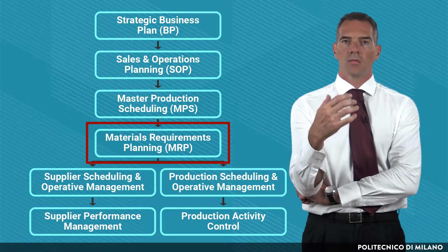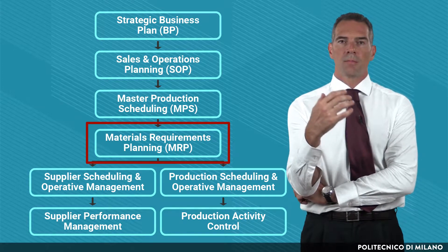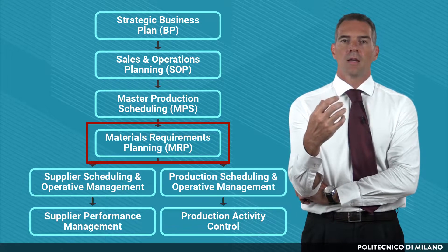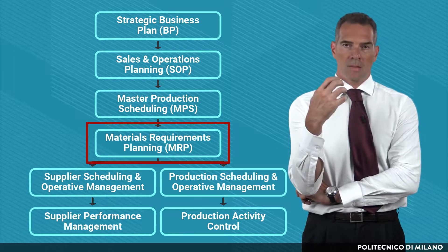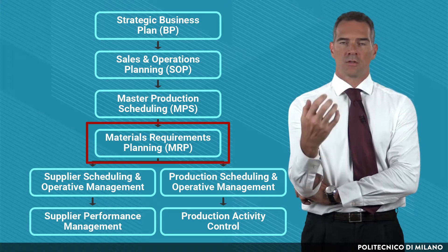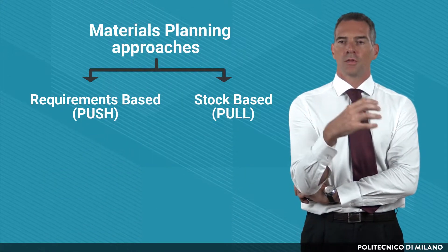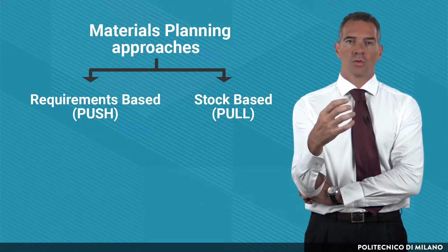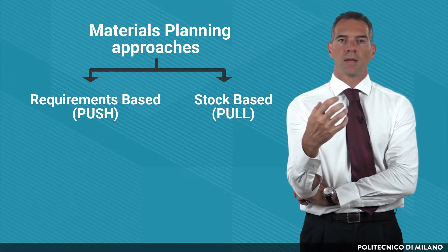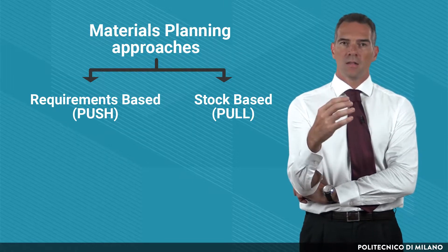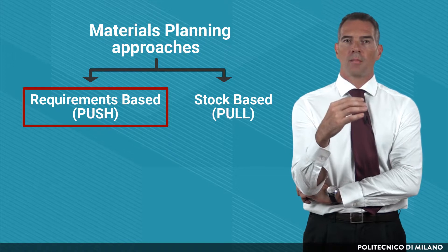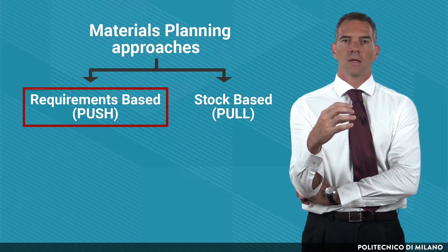The objective of the Materials Requirement Planning phase is that of fulfilling demand by synchronizing materials flow with the production activities. Of the two approaches used in Materials Planning, Materials Requirement Planning follows the so-called requirement-based approach — the PUSH approach.